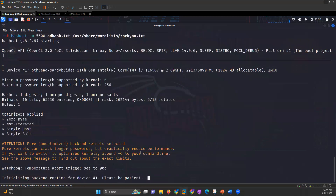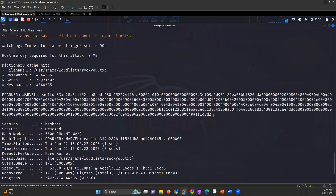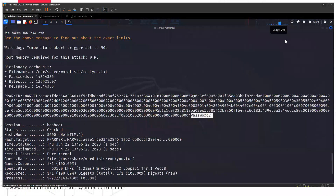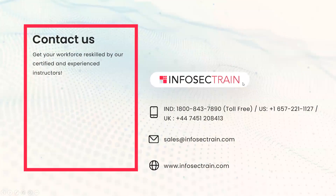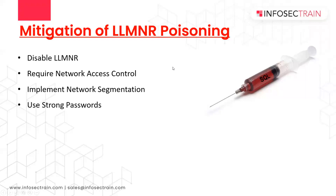Hashcat will calculate and give you the plaintext password. As we can see, we found the plaintext for the hash — this is how attackers perform LLMNR poisoning. To mitigate it, you can disable LLMNR, require network access control, implement network segmentation, and use strong passwords. That's it for this video, thank you.